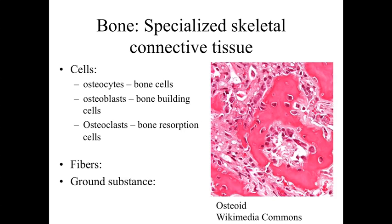Focusing on bone as an example of a specialized connective tissue, it's going to have the same components as other generic connective tissues: cells, fibers, and ground substance, with cells scattered and an extracellular matrix of fibers and ground substance in between. The primary cells are going to be osteocytes ("os" for bone, "cyte" for cell). We're going to have osteoblasts ("os" for bone, "blast" for builders) — bone-building cells. And we're going to have osteoclasts ("clast" with a C) — bone resorption cells specialized for eroding bone, either as a normal remodeling process or to liberate materials found within the bone itself.